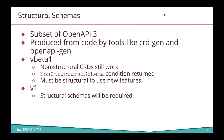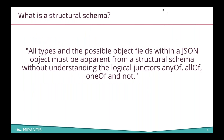If you're moving along to V1, structural schemas will be required, so you want to start thinking about this. The short definition is: all types and the possible object fields within a JSON object must be apparent from a structural schema without understanding the logical junctures of anyOf, allOf, oneOf, and not.